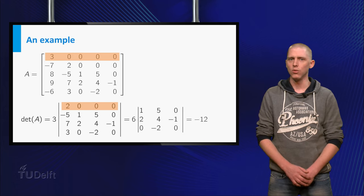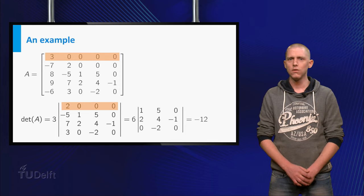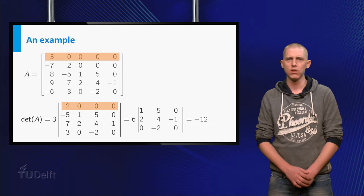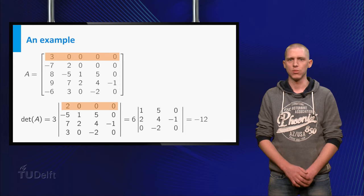In the example, because of all the zeros in the first two rows, the 5 by 5 determinant was easily reduced to a 3 by 3 determinant.